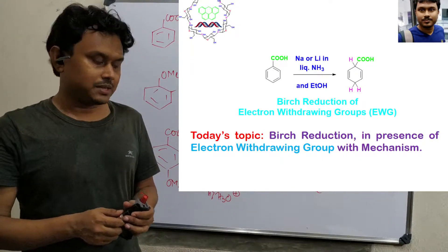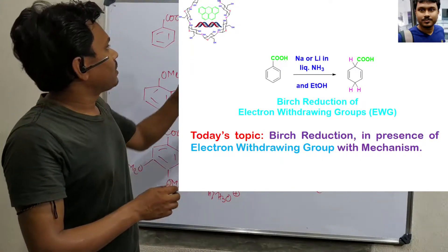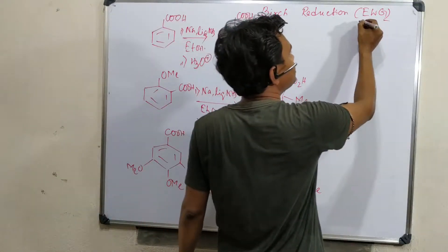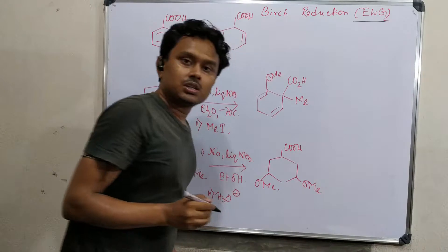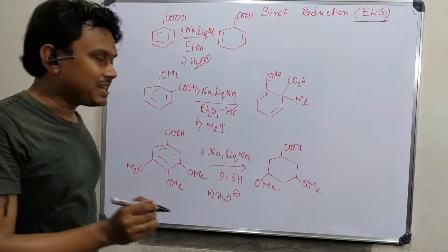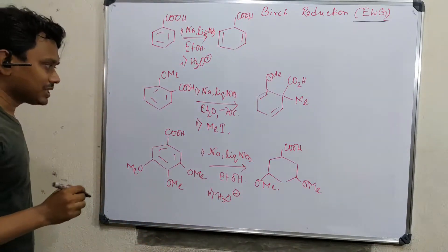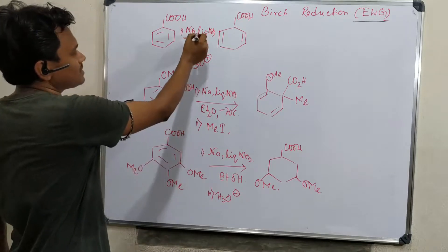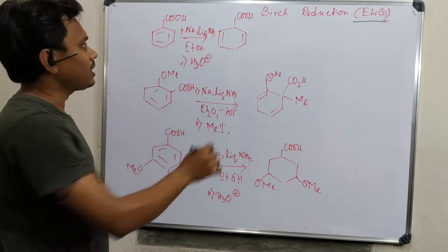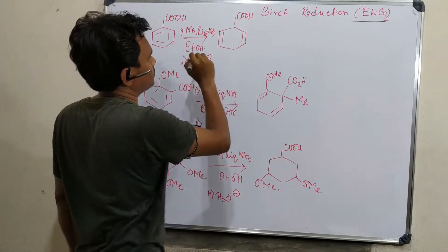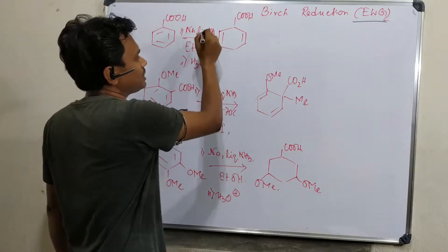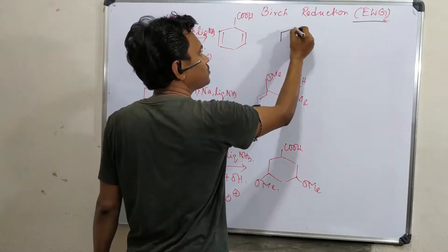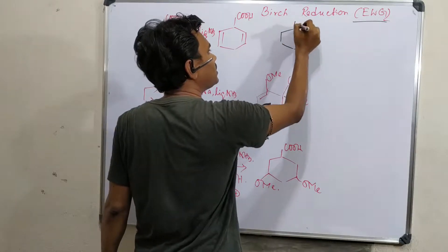In this video I shall explain Birch reduction in the presence of electron withdrawing groups. One of the best electron withdrawing groups is the carboxylate group. What happens with sodium in liquid ammonia? It produces — but how? With sodium in liquid ammonia in the presence of base, the acid first deprotonates to produce the corresponding carboxylate anion, O minus.